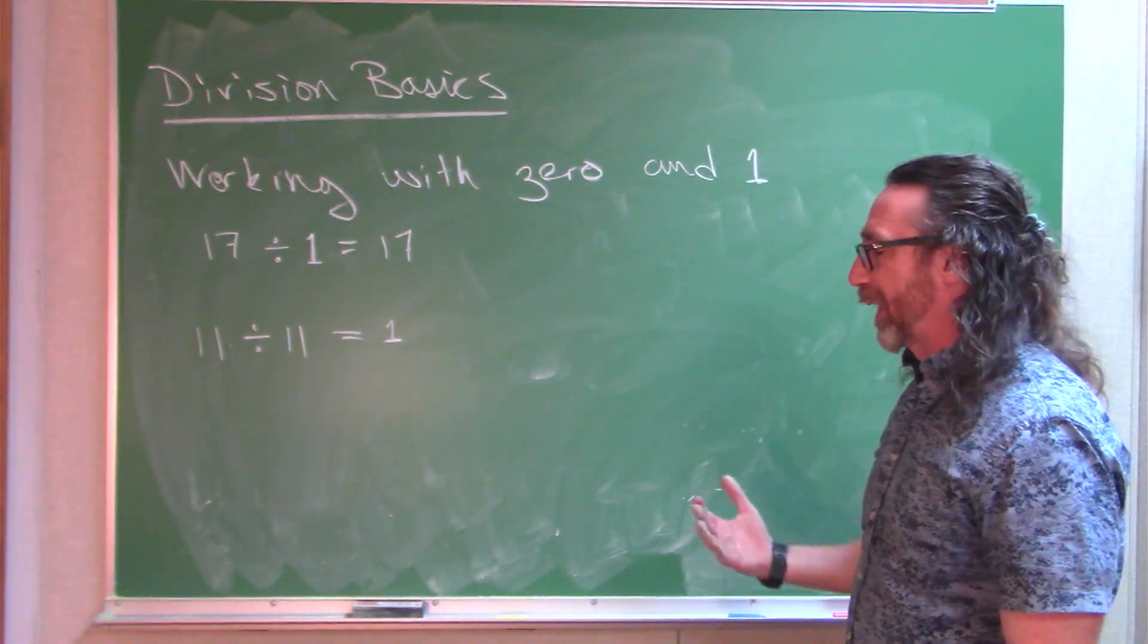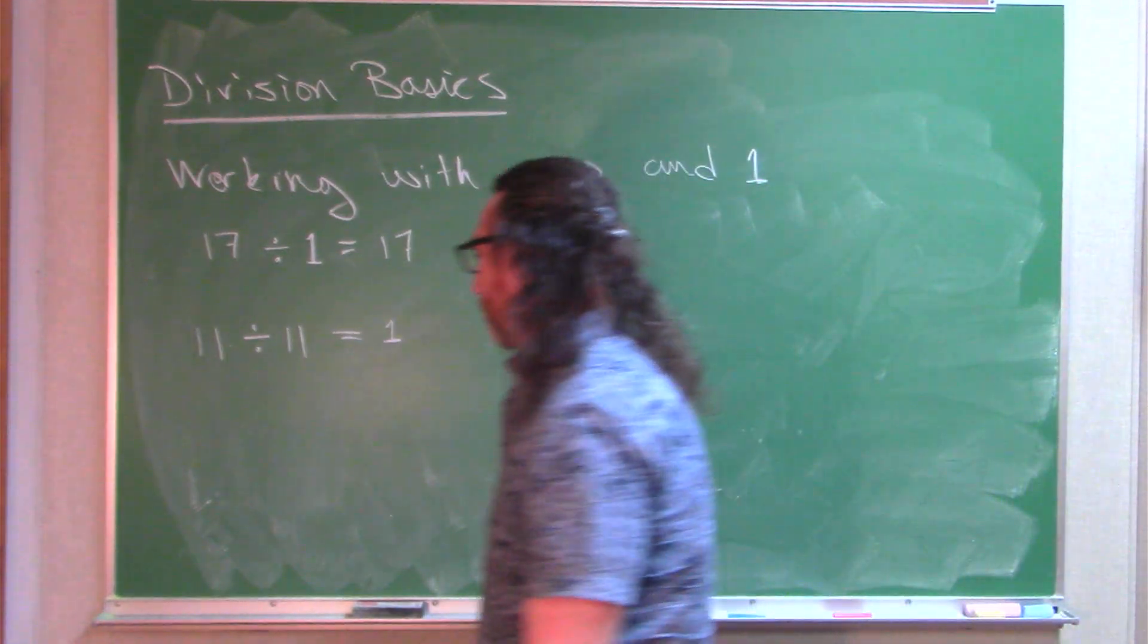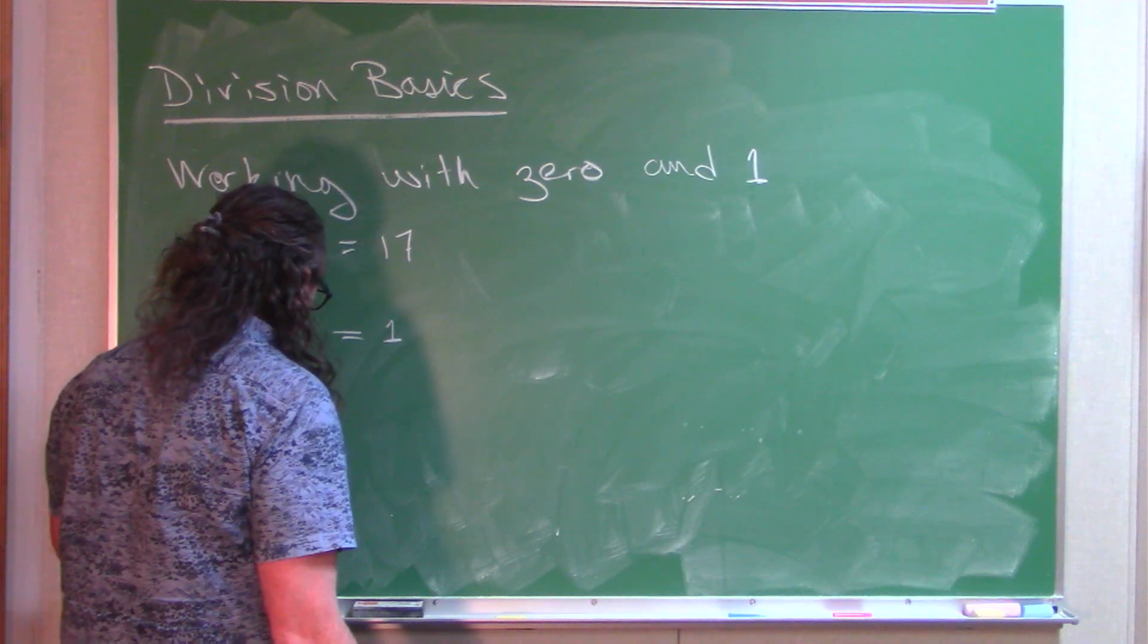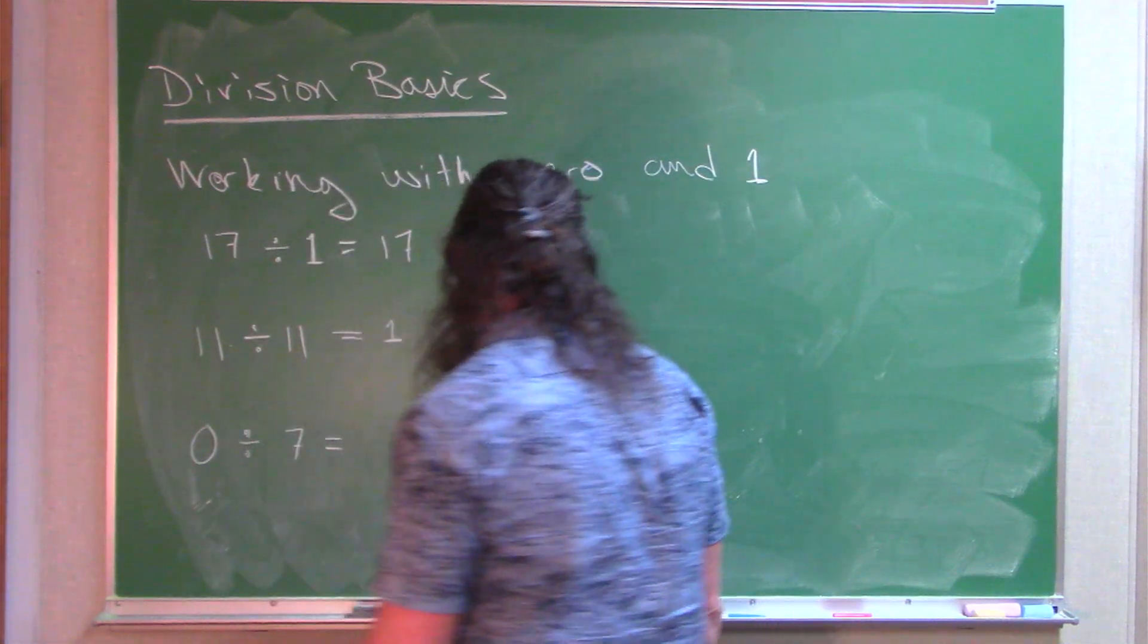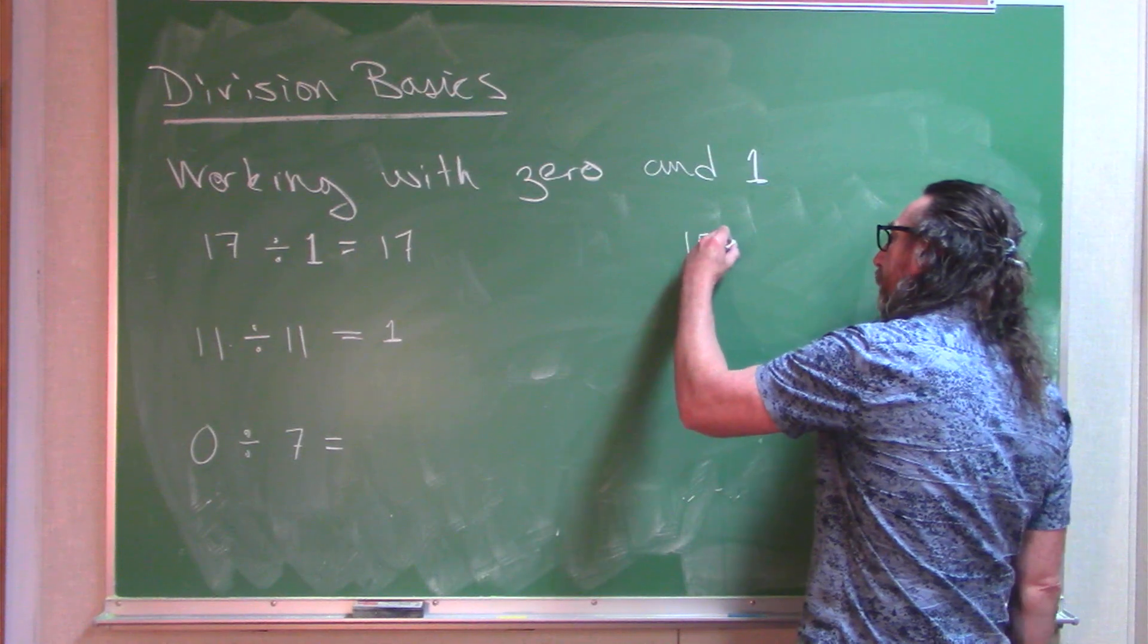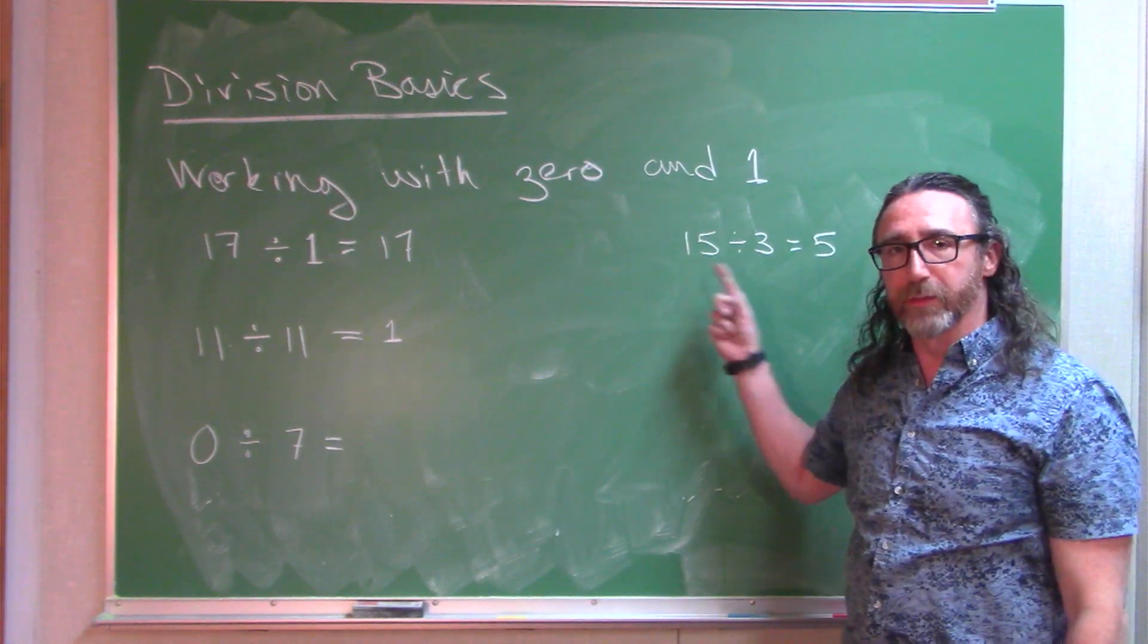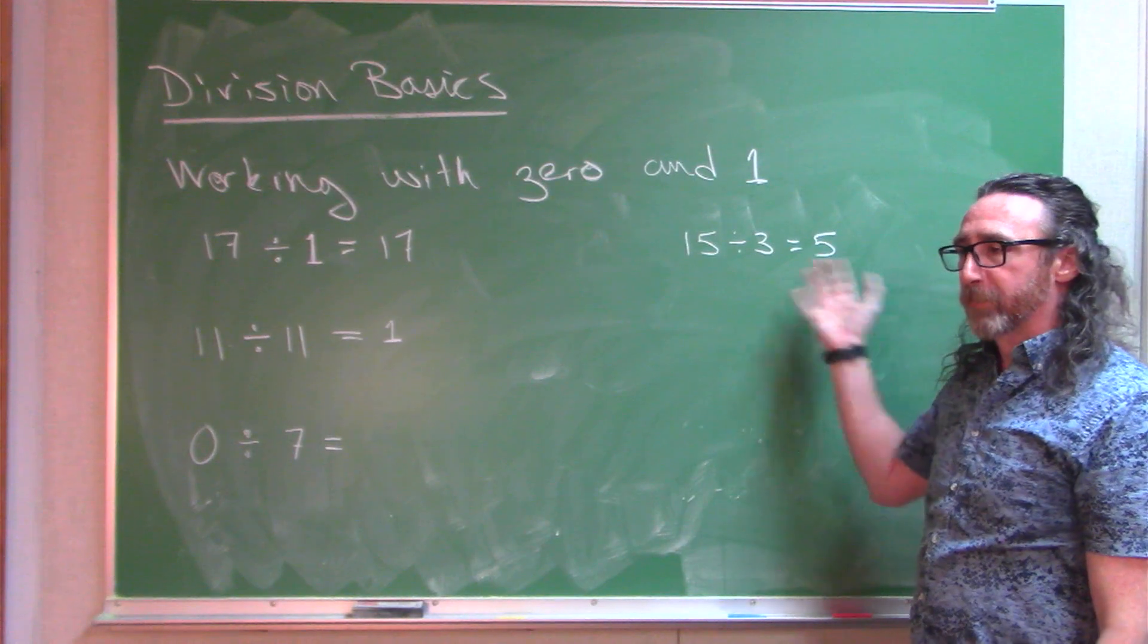Let's talk a little bit about working with 0. 0 divided by anything. Let's say 0 divided by 7. When we were working with our example before, 15 divided by 3 equals 5, we talked about taking a set of 15 things, dividing it into different groups of 3, and so we had 5 groups. We could also consider doing like this.